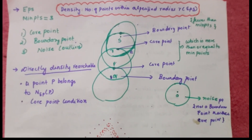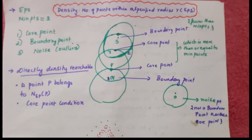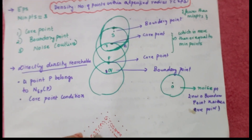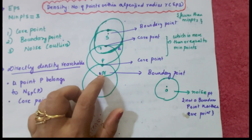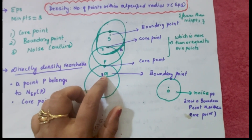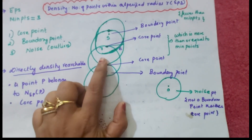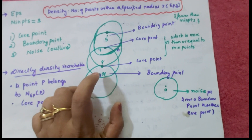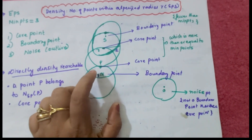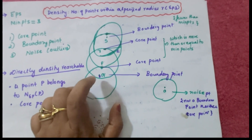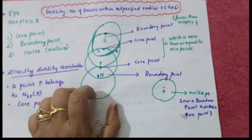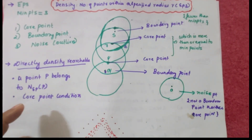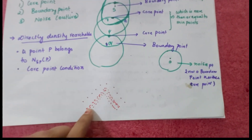The main feature of DBSCAN is that it finds outliers. Now let us look at directly density reachable. For example, check whether Q is directly density reachable from P. Two conditions must be satisfied: first, Q must be in the neighborhood of P — yes, it is. Second, P must be a core point. So the point must belong to the neighborhood and the source point must be a core point.